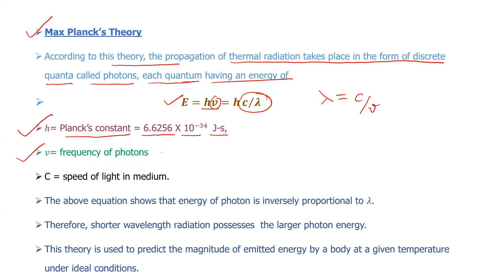Nu is the frequency of the photons. C is the speed of light in the medium. The above equation shows that energy of photon is inversely proportional to lambda. So as the wavelength will increase, the energy emitted by the photon will reduce, or in other words, we can say shorter wavelength radiation possesses the larger photon energy. This theory is used to predict the magnitude of emitted energy by a body at a given temperature under ideal conditions.